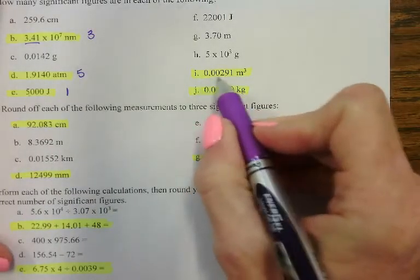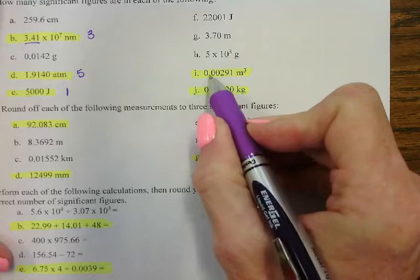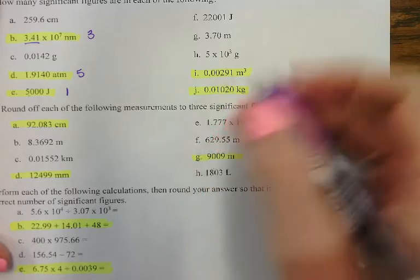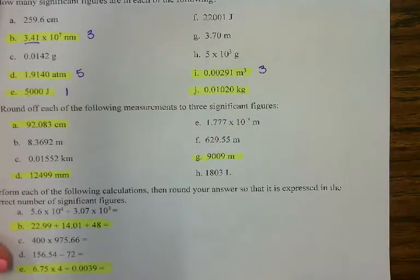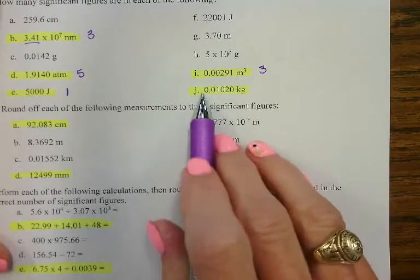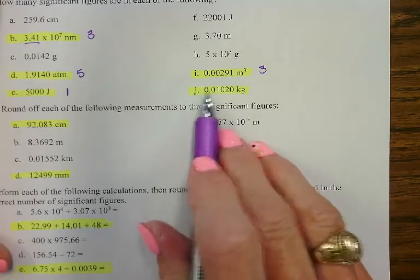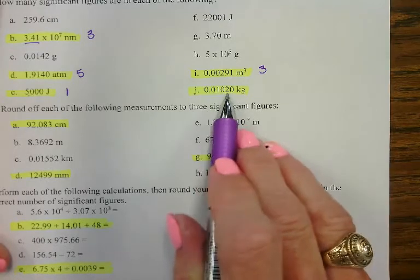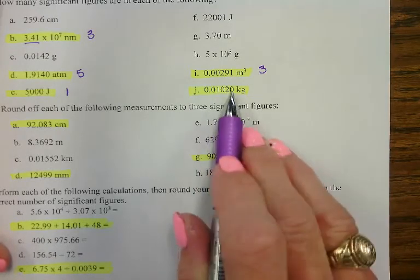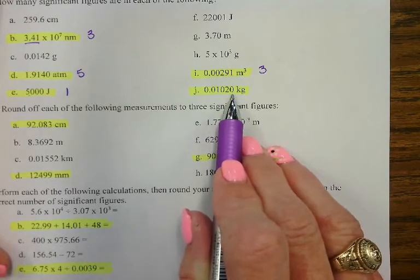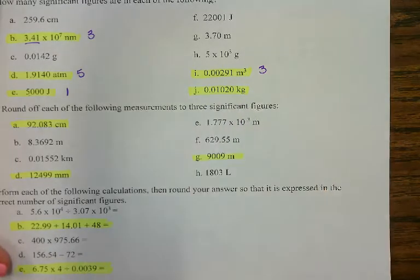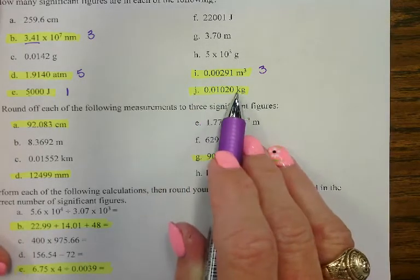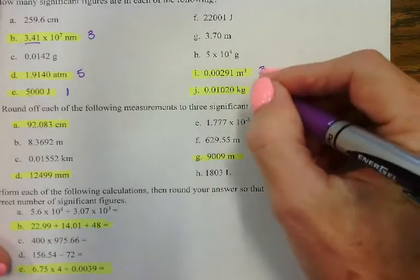Letter I: zeros in the beginning are never significant, even if there is a decimal. So there are only three sig figs in this number. Letter J: these two zeros are not significant. The middle zero is significant because it's captive between two non-zero numbers. That final zero is significant because it's a final zero after the decimal point. So how many sig figs in this number? Four.